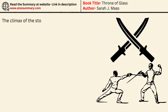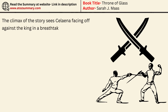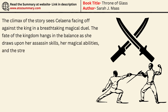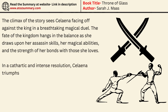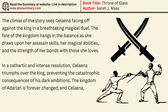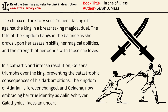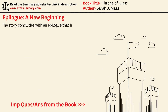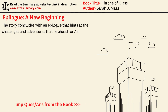The climax of the story sees Selina facing off against the king in a breathtaking magical duel. The fate of the kingdom hangs in the balance as she draws upon her assassin skills, her magical abilities, and the strength of her bonds with those she loves. In a cathartic and intense resolution, Selina triumphs over the king, preventing the catastrophic consequences of his dark ambitions. The kingdom of Adarlin is forever changed, and Selina, now embracing her true identity as Aelin Eshriver Galathinius, faces an uncertain future. The story concludes with an epilogue that hints at the challenges and adventures that lie ahead for Aelin and her friends.